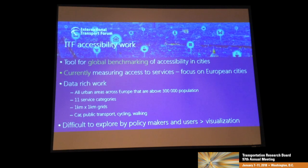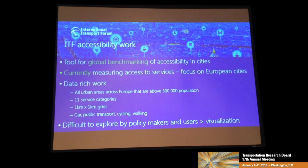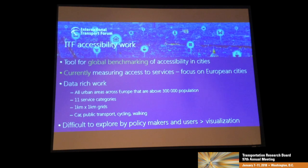We are looking at European cities at the moment. This is very data-rich work — we have all urban areas in Europe above about 300,000 population, 11 service categories, and the cities are divided into one-kilometer grids. So we have over 1 million origins and therefore destinations in this whole region of Europe, and multiple origin-destination possibilities — it's a huge data matrix.